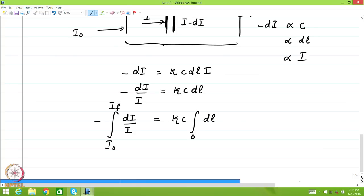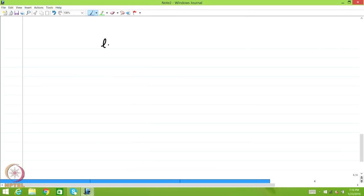starting from the length 0 here to the length L. So this gives you immediately L and I between the limits I naught and I f is kappa C L between the limits 0 and L. And therefore you know immediately that you get ln I naught by I f